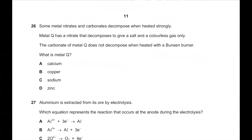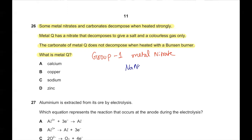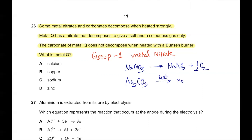Question number 26. Metal Q has a nitrate that decomposes to give a salt and a colorless gas only, and its carbonate does not decompose when heated with a Bunsen burner. Group 1 metal nitrates — such as sodium nitrate or potassium nitrate — when strongly heated turn into the nitrite and give off oxygen, a colorless gas. Their carbonates are so stable they simply melt without reacting. So C is the correct answer, as calcium, copper, and zinc do not fit.